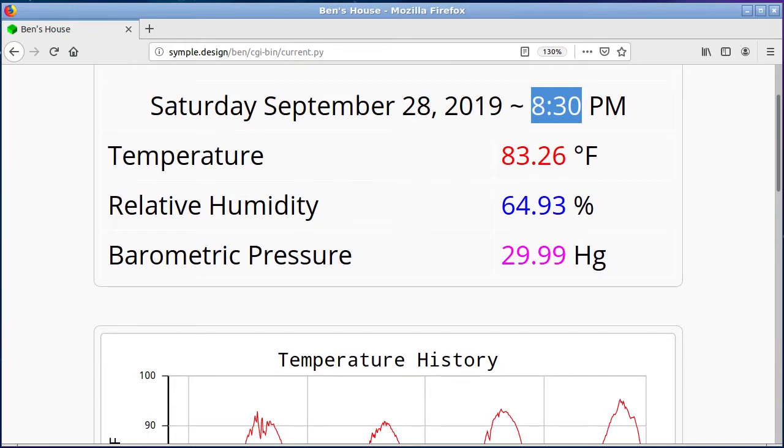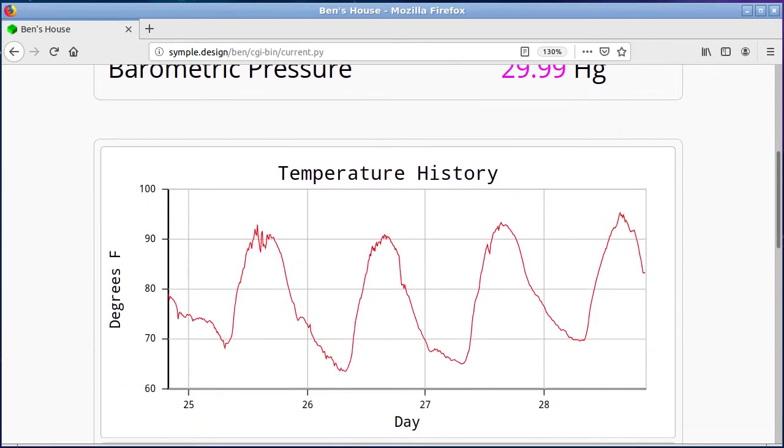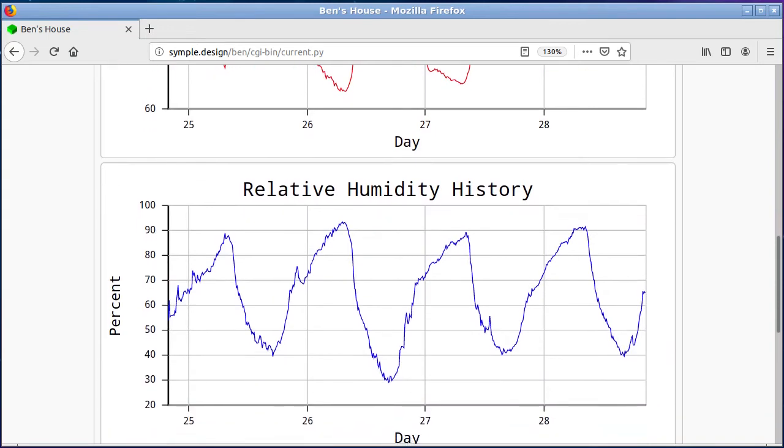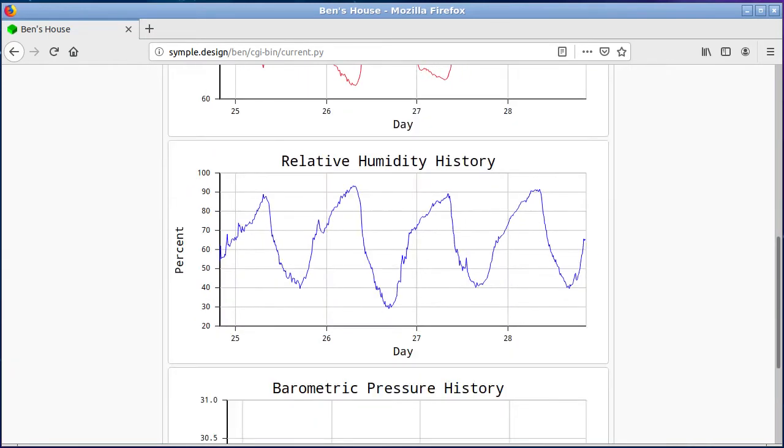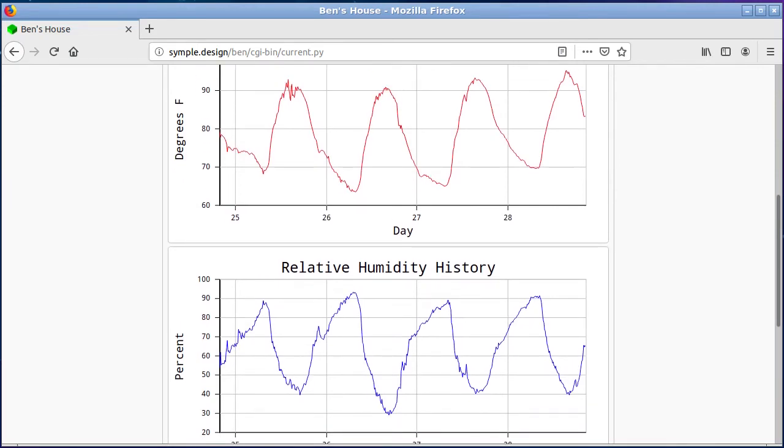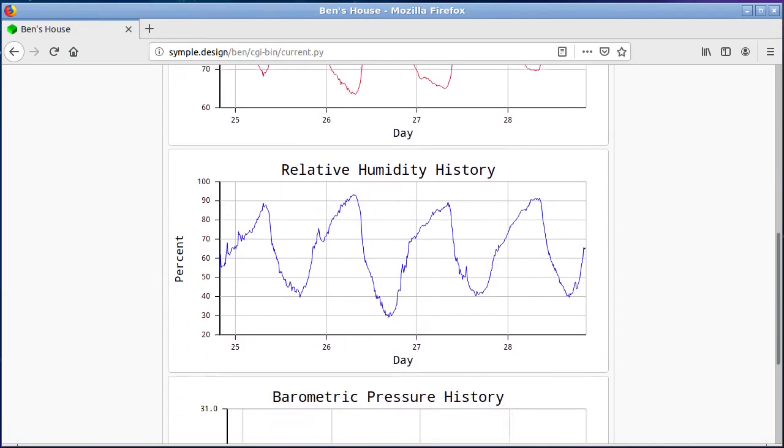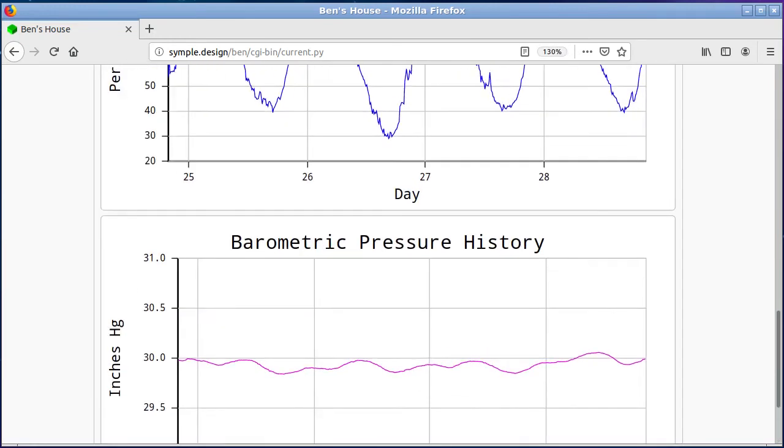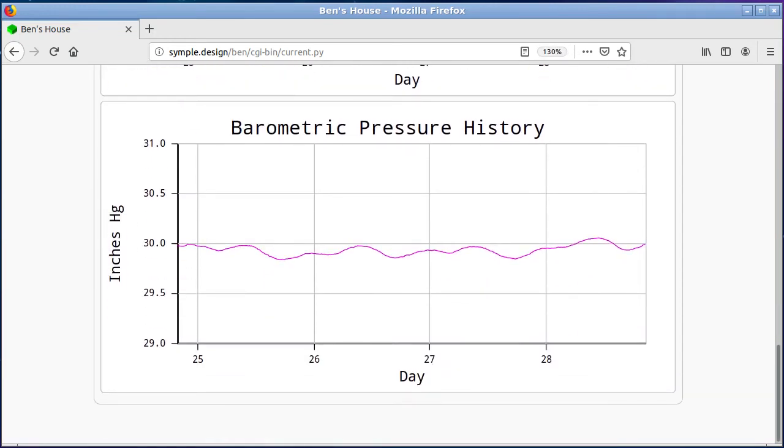We've got a temperature history—here's the four days that we have up to the current. Here's our relative humidity. Because we really are having essentially no weather, the relative humidity and temperature are just the inverse of each other. Warmer air holds more water, cooler air holds less water, so they're just working in opposites.